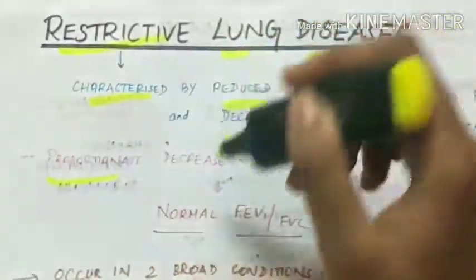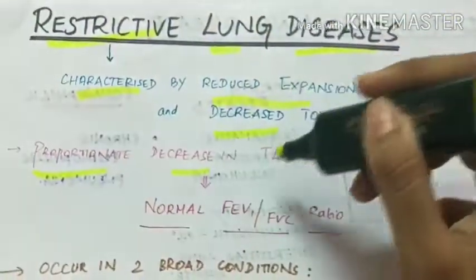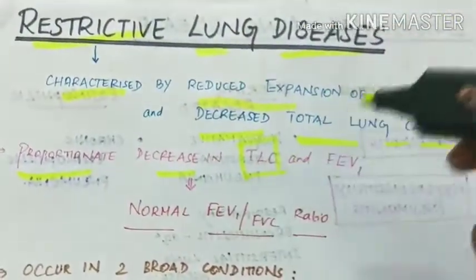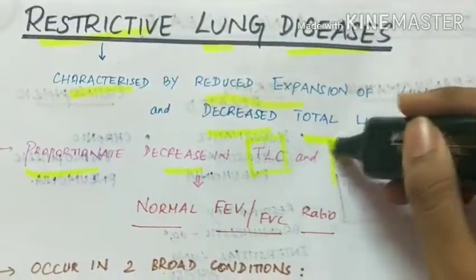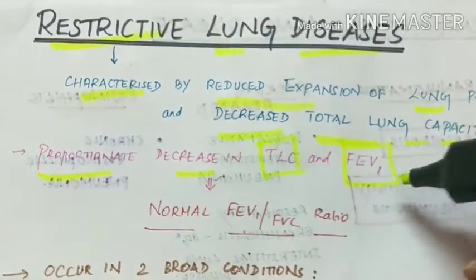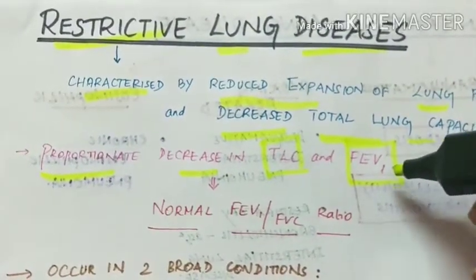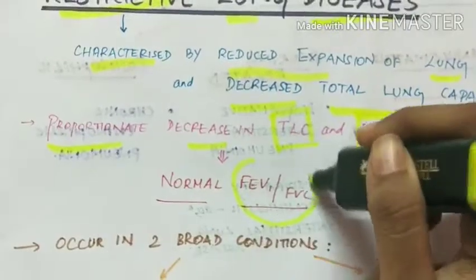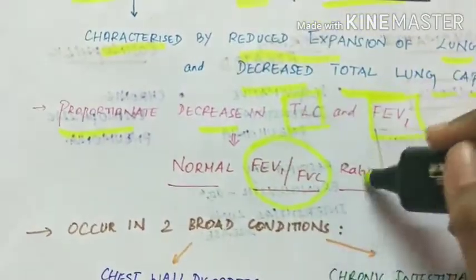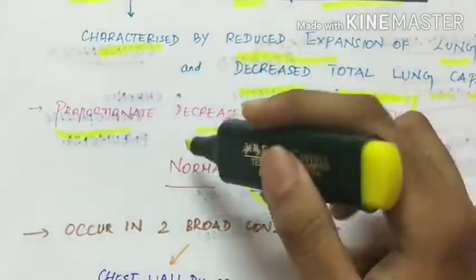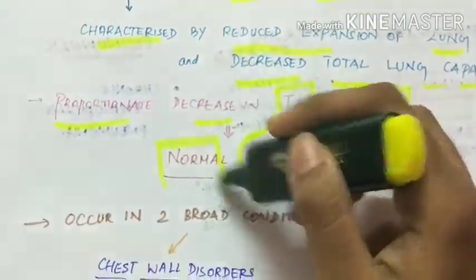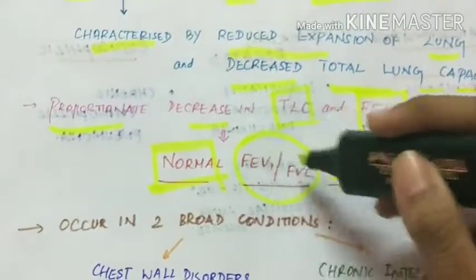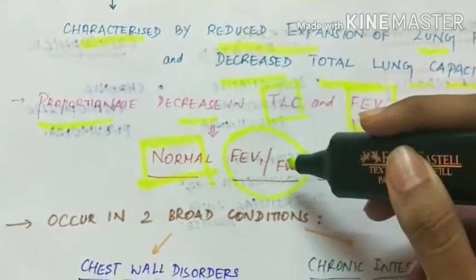There is a proportionate decrease in total lung capacity and forced expiratory volume at 1 second. The FEV1 by FVC ratio remains normal as both are proportionately decreased.